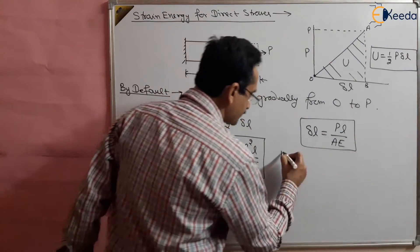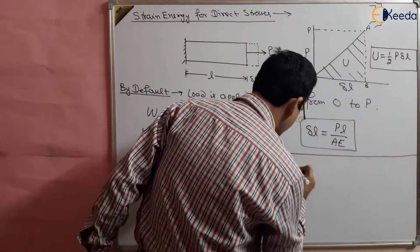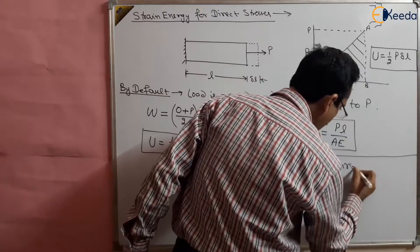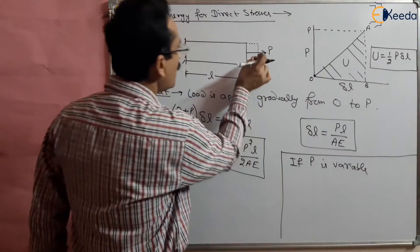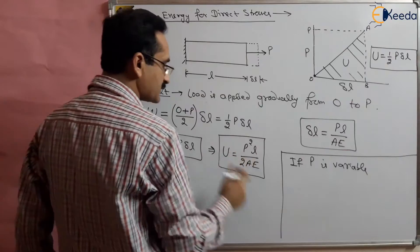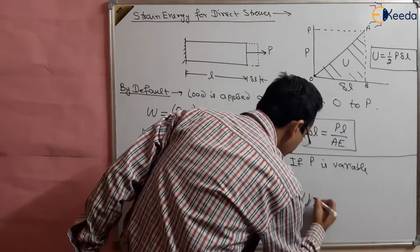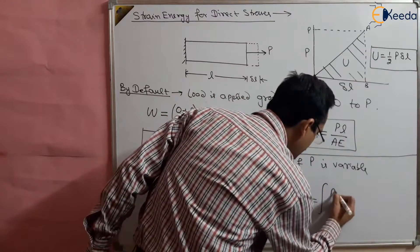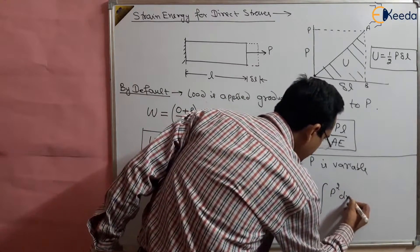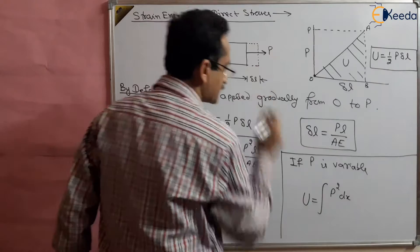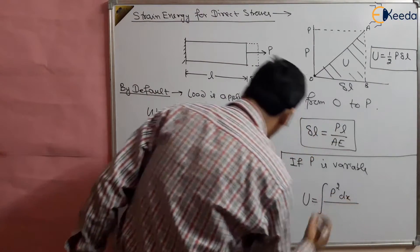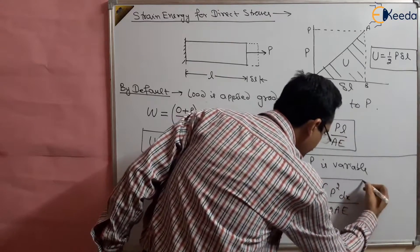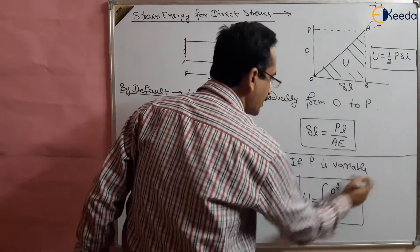If P is variable, we take a small section dx and apply the formula. So U will be equal to the integration of P squared dx upon 2AE. This is the strain energy stored for a variable load.